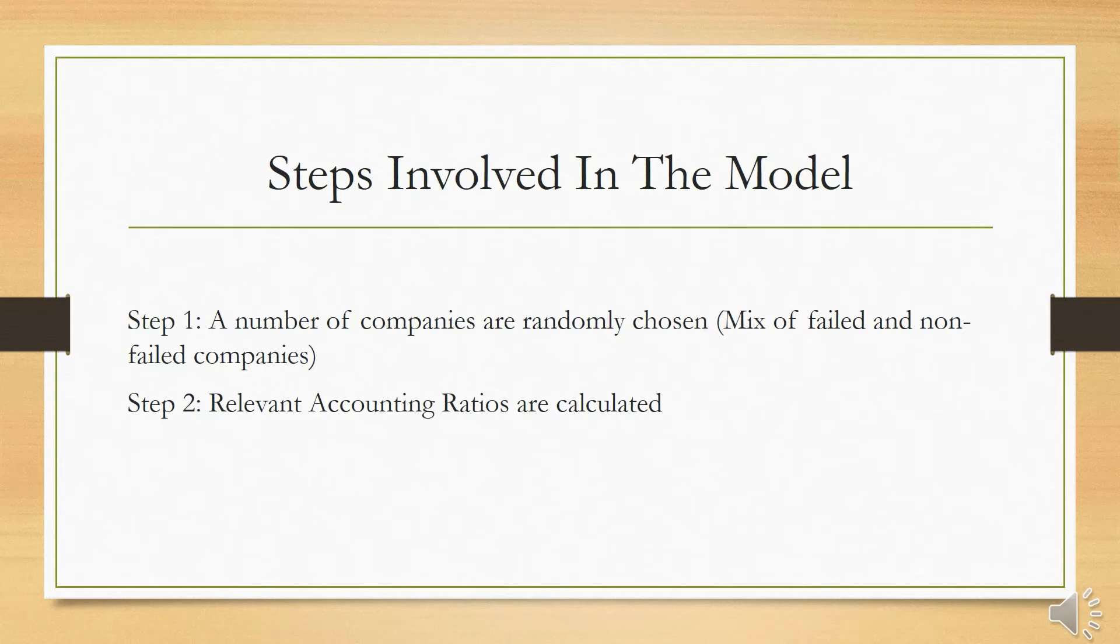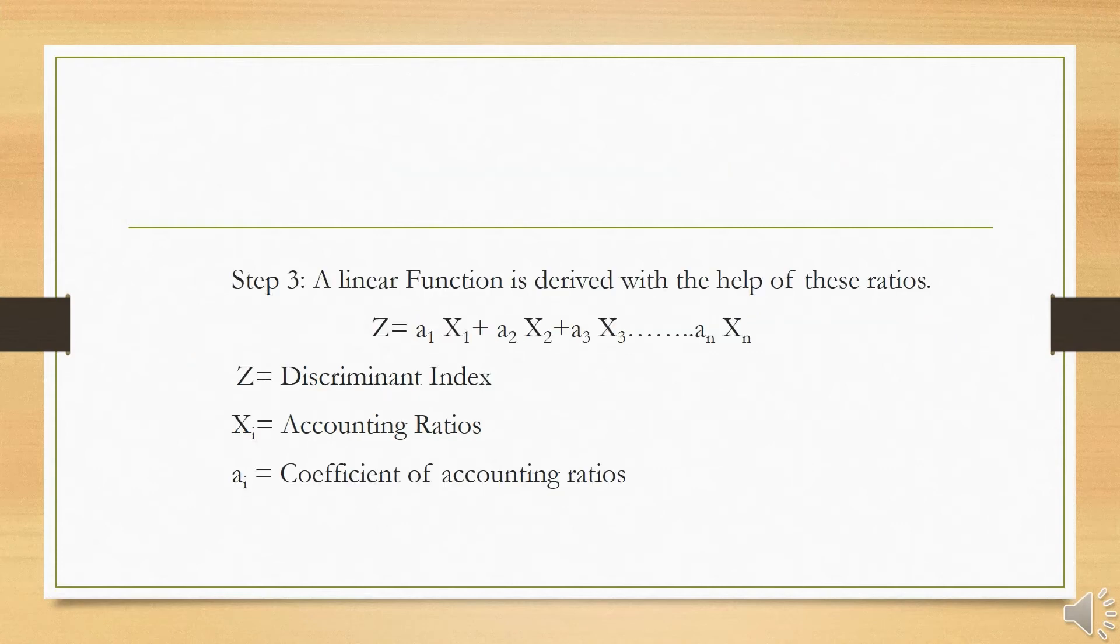These accounting ratios are calculated with the financial information of the selected companies, and we select these companies because they are considered effective for distress prediction. In the next step, a linear function is derived as shown in this slide. Here in this linear function, Z is a discriminant index that is being calculated.